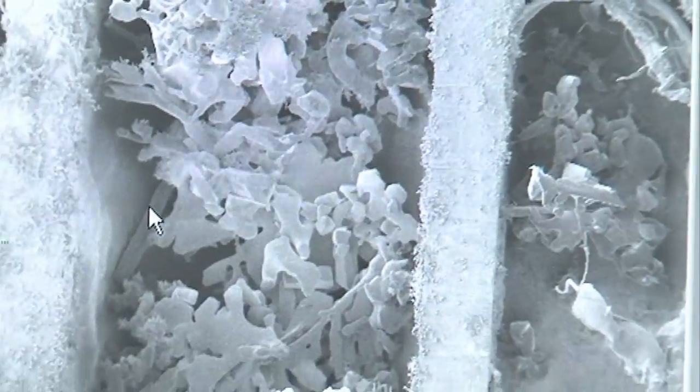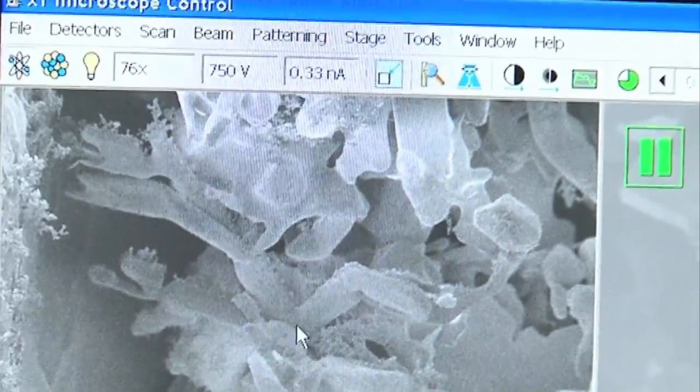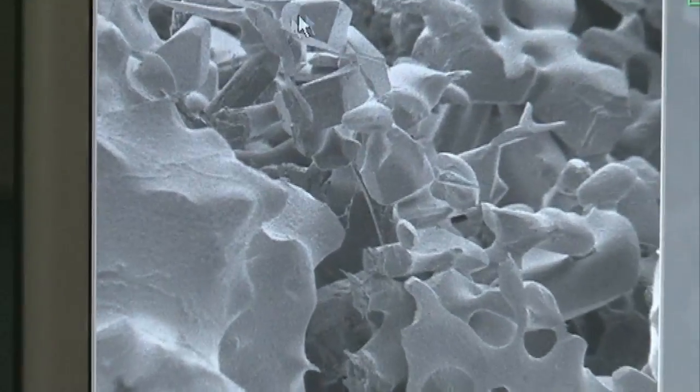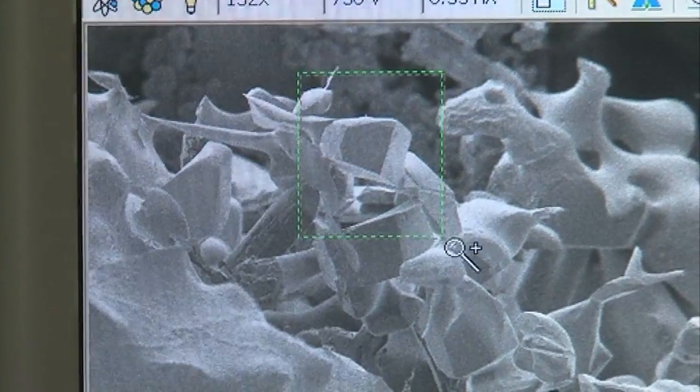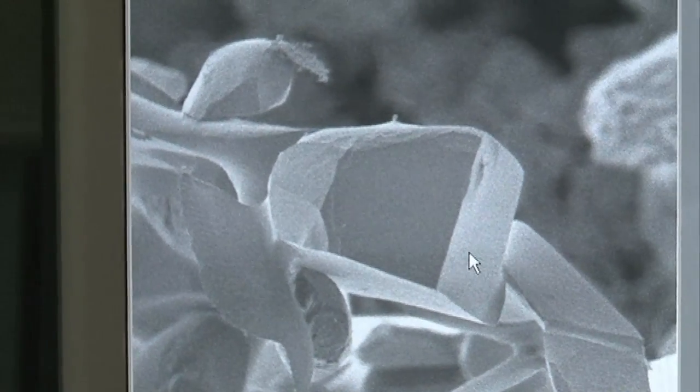The problem is of course getting it into the microscope, but first of all it's fallen on the ground so we're not looking at pristine snow crystals here. Can you zoom in here? That's really nice. You can see a facet. You can really see the crystalline structure really quite neatly here.